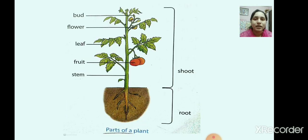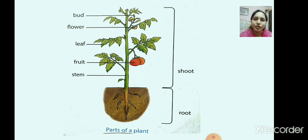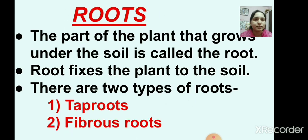So children, tell me the parts of a plant. There are two main parts of a plant, as you can see in the diagram. The part of a plant which grows under the soil is called root, and the part which grows above the soil is called shoot. Shoot has bud, flower, leaf, fruit, and stem.